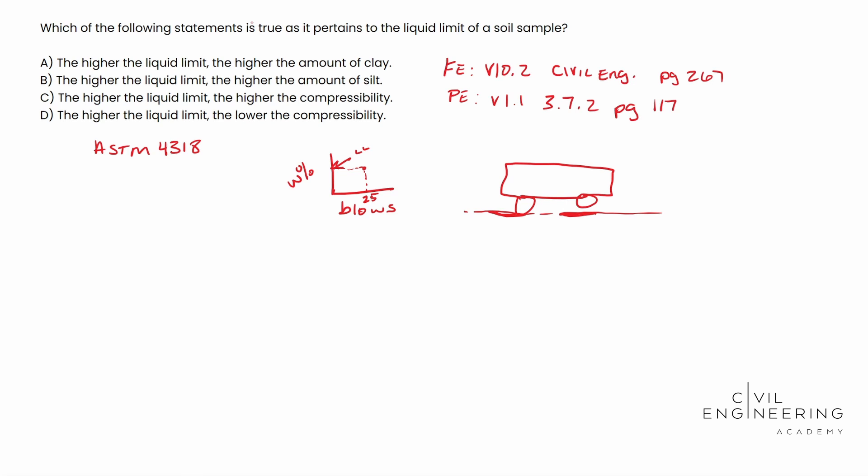And so with that said, the answer is actually C. So think about it, the higher the liquid limit, the more water it takes for a soil to start acting like a liquid, the higher the compressibility, the easier it is to compact. So this is a really good theory problem. And I hope this video helps. I hope it clears some things up and we'll catch you next time.